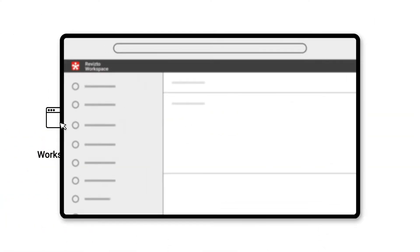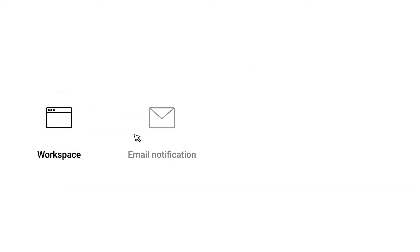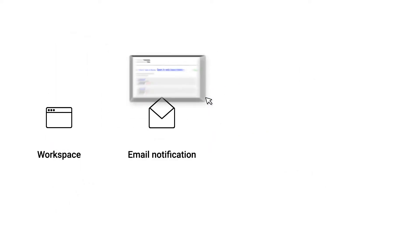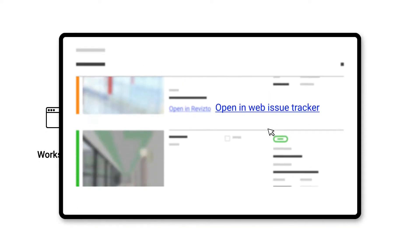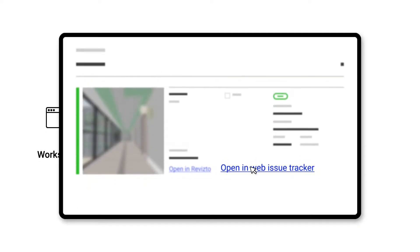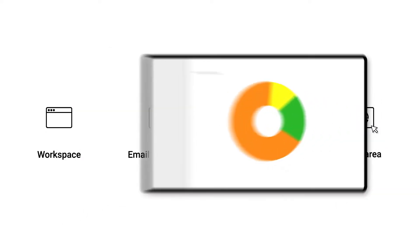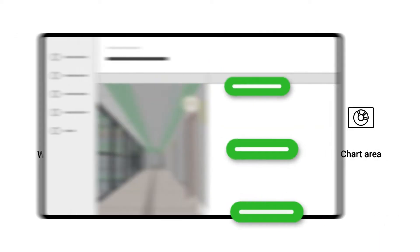There are four ways to open the Web Issue Tracker: from the workspace, from an email notification, from a link to an issue in a report, and you can switch from a chart area to the list of issues that contribute to that area.